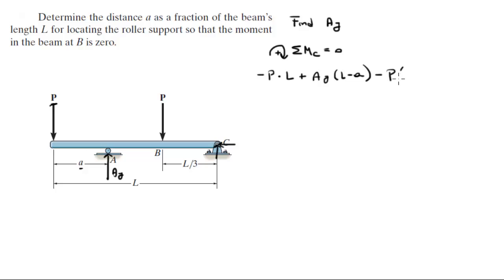Minus P times L over 3 because that's the moment created by this second P right here and it is a distance of L over 3 from C, and the sum of all of this is equal to zero. So when you solve for AY you get that AY is equal to P times L plus P times L over 3, all over (L minus A). If you further simplify this, eventually you're going to reach that AY is